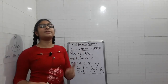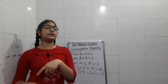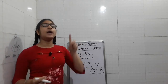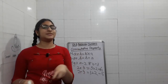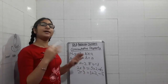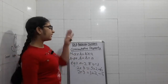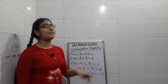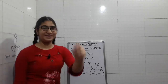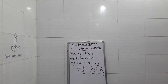So, commutative property applies to multiplication — A into B equals B into A — and addition — A plus B equals B plus A — meaning the position of terms can be changed and the answer remains the same. Now let's move to our associative property.